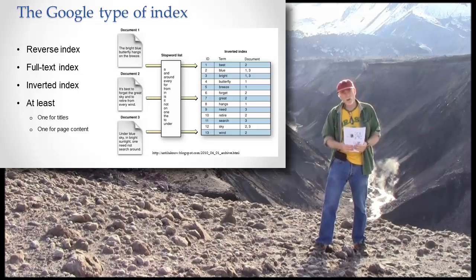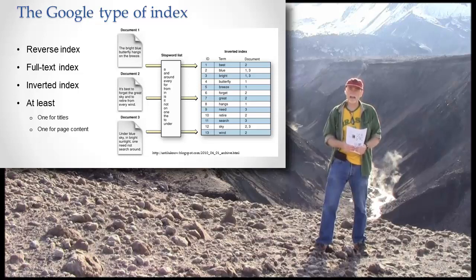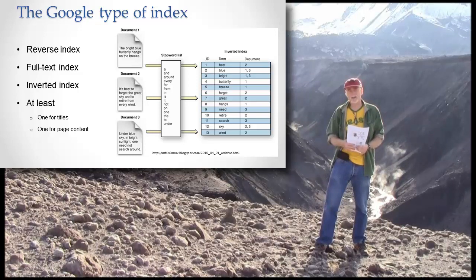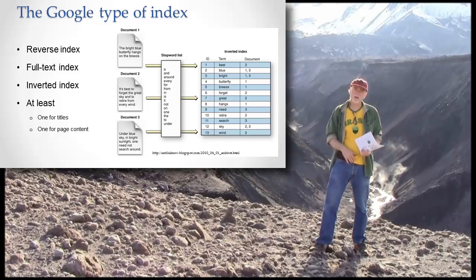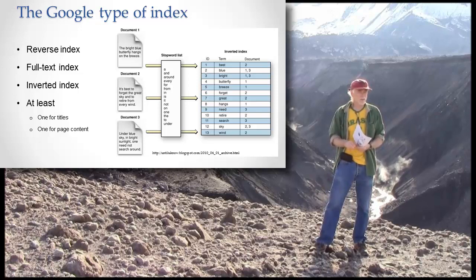Let's look more specifically. You know from using Google that you can search for any word on any page on the web. Now that's not exactly true because Google doesn't index the entire web, but for the pages that are indexed by Google, you can go to any word on any page. So it has to have a pretty big index.